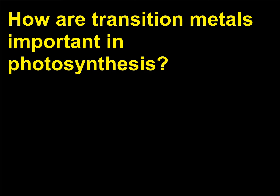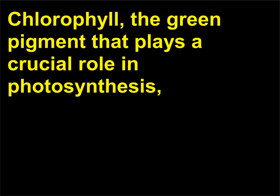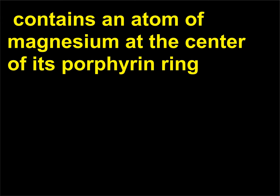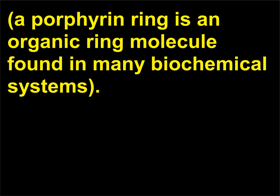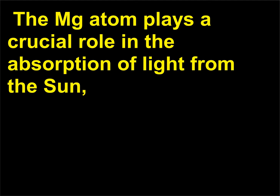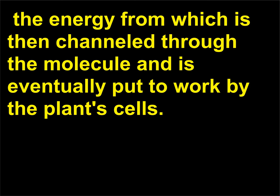How are transition metals important in photosynthesis? Chlorophyll, the green pigment that plays a crucial role in photosynthesis, contains an atom of magnesium at the center of its porphyrin ring. A porphyrin ring is an organic ring molecule found in many biochemical systems. The Mg atom plays a crucial role in the absorption of light from the sun, the energy from which is then channeled through the molecule and is eventually put to work by the plant's cells.